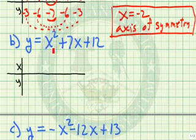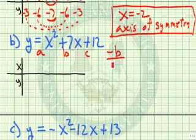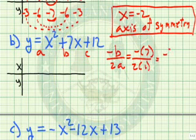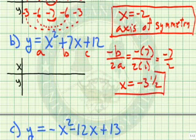Let's try the equation y equals x squared plus 7x plus 12. We have our a, our b, and our c. The axis of symmetry is negative b over 2a. Negative b would be negative 7 divided by 2 times 1, which gives us negative 7 halves. So x equals negative 3 and a half is our axis of symmetry.